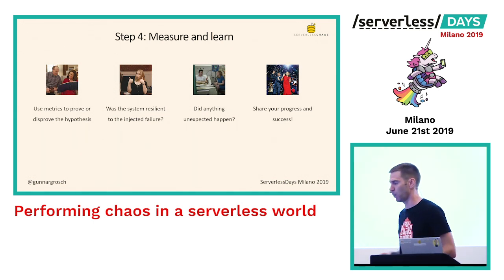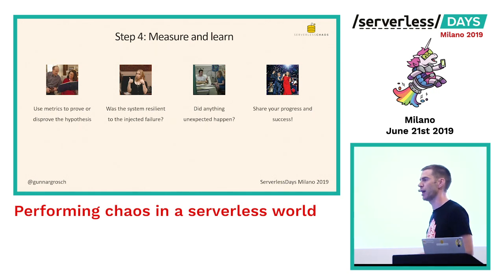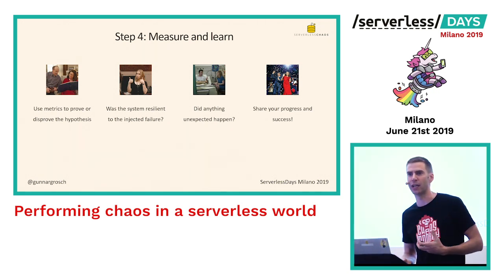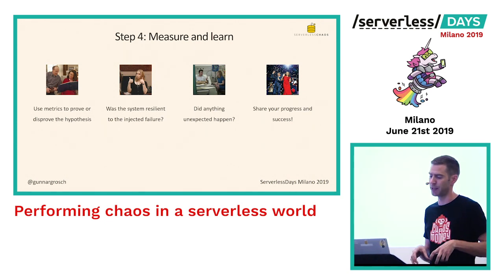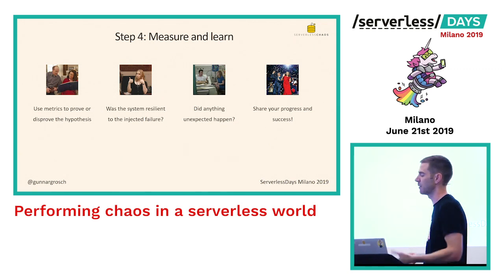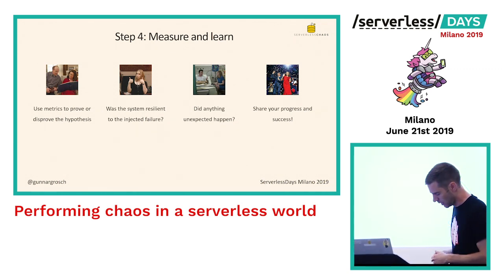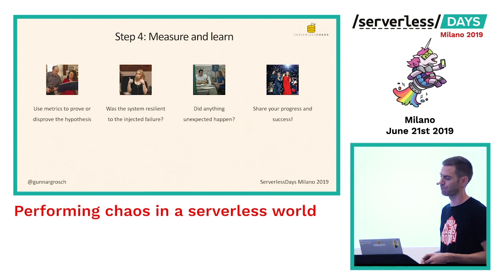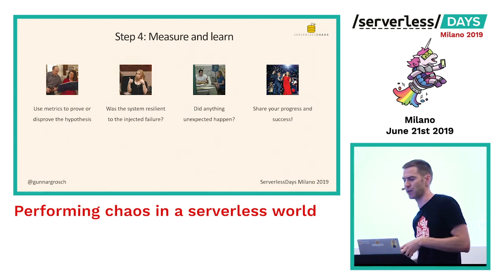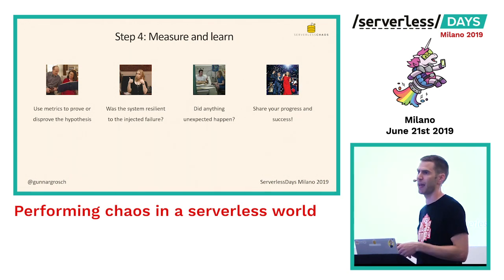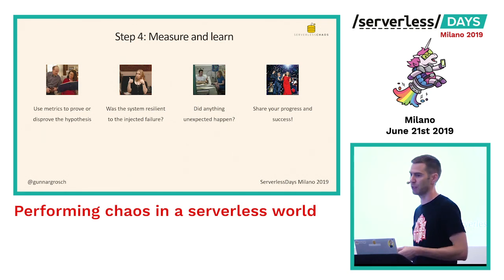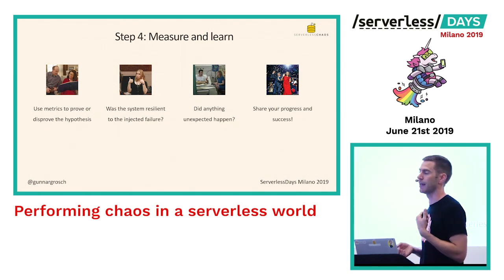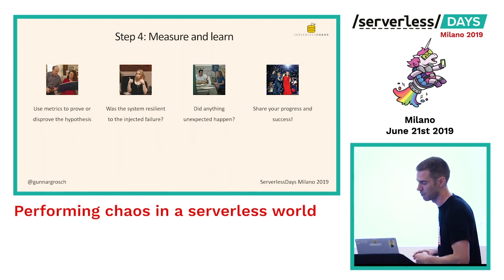After running our experiments, we need to measure and learn from them. We look at the metrics we had initially and see what happened during the experiment. Was the system resilient? Could it withstand the failure we injected? It's not uncommon to find unexpected things during experiments. Ask yourself: did something unexpected happen? An important point — make sure to let everyone in the organization know what happened. It's not a blame game, but so everyone knows how the system behaves.